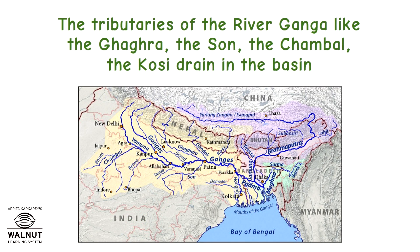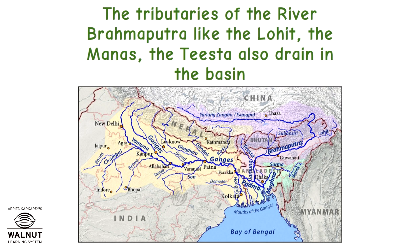The tributaries of the river Ganga, like the Ghagra, Son, Chambal, and Kosi, drain in the basin. The tributaries of the river Brahmaputra, like the Lohit, Manas, and Tista, also drain in the basin.